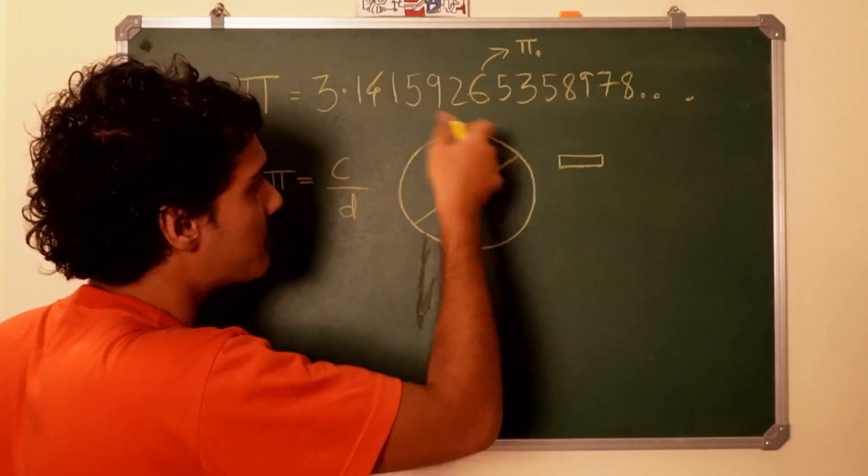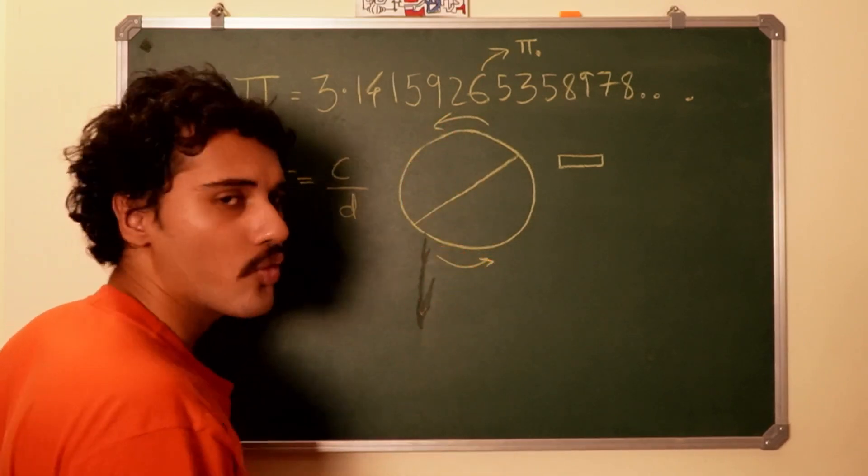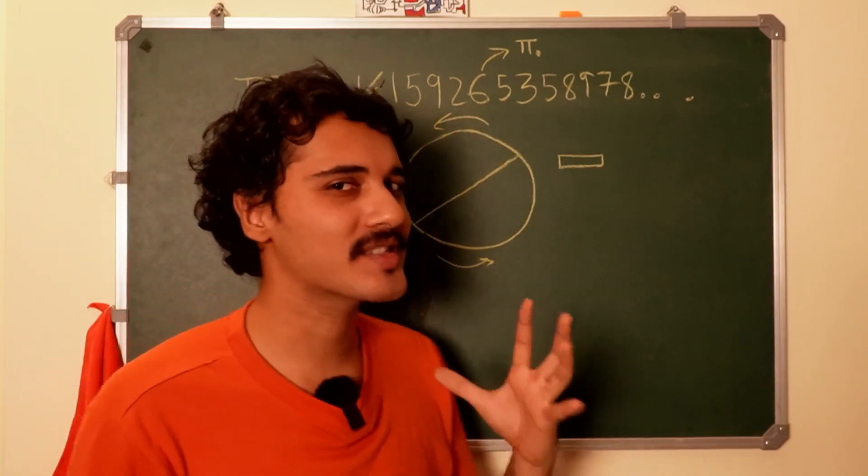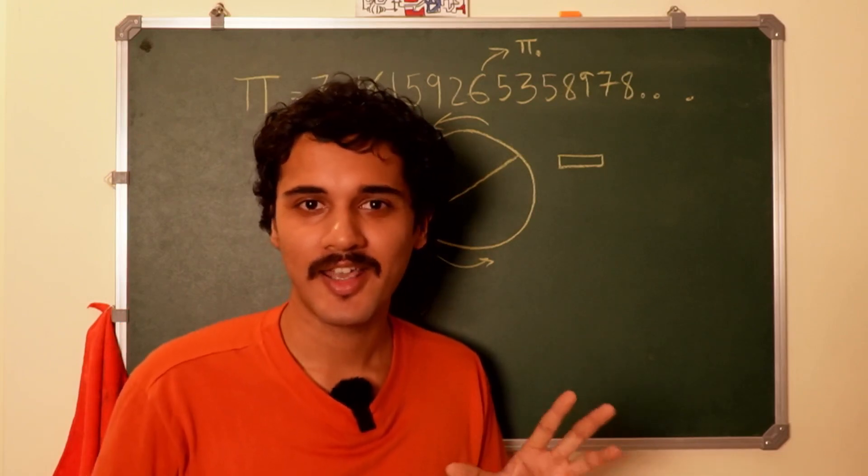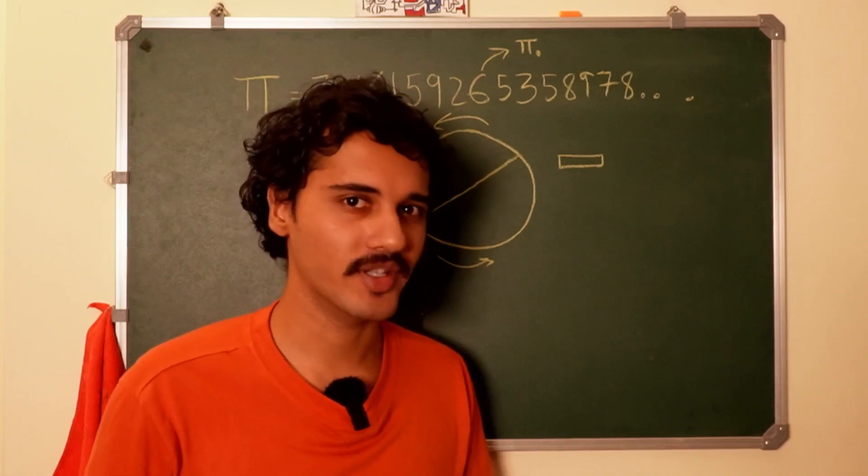But then something interesting happens if you come up with a ring or you can think of a ring which is spinning. What's the difference between a circle and a spinning circle? Mathematically there is none, but physically if you're talking about a ring and a spinning ring, there are differences.